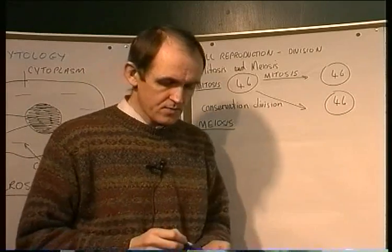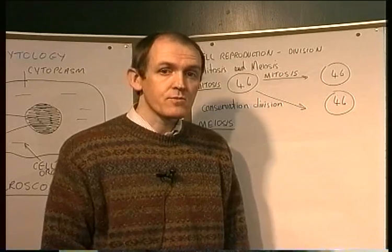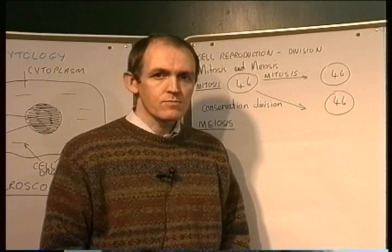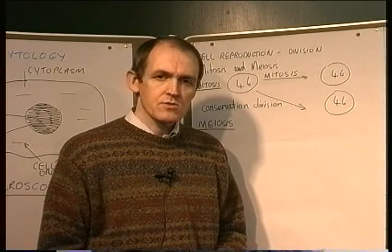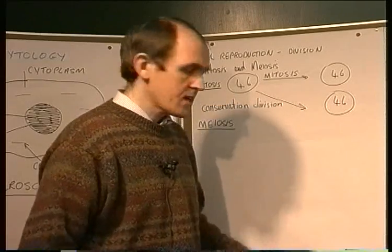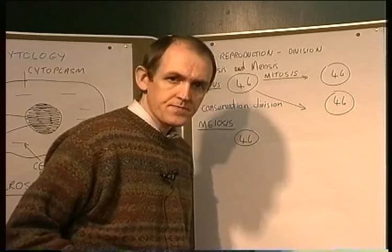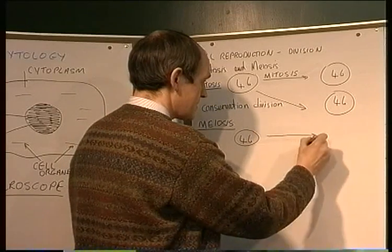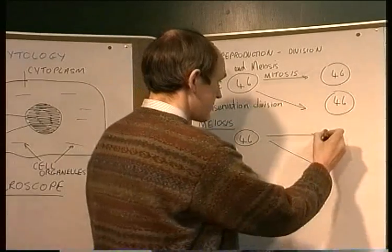Meiosis only occurs in one circumstance, and that is the formation of sex cells — the formation of gametes, sperm cells or egg cells. They're both formed in the gonads of the parent through the process of meiosis. In this case, the parent cell contains 46 chromosomes, but when it divides, the daughter cells no longer contain 46 chromosomes — they now contain 23 chromosomes.